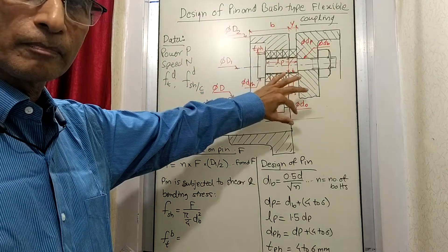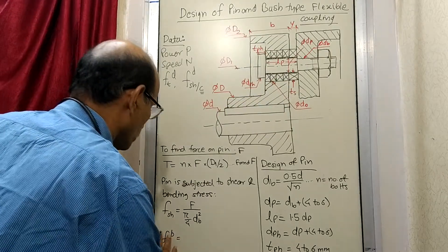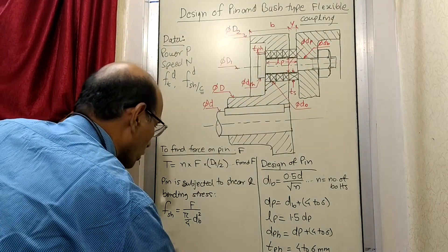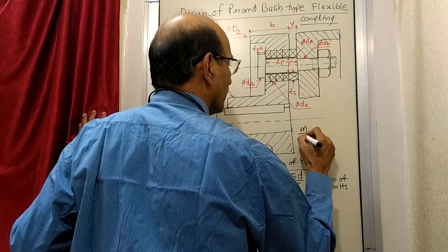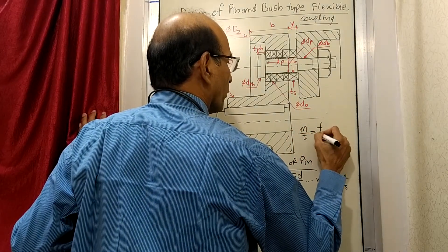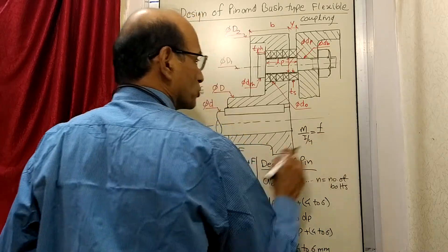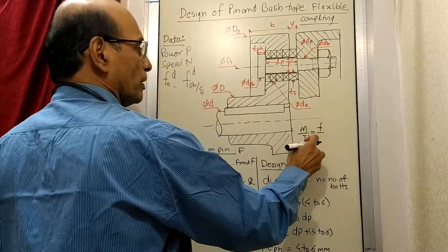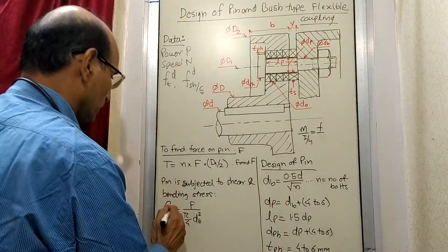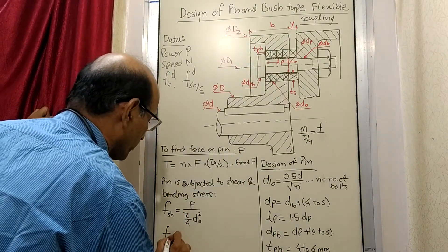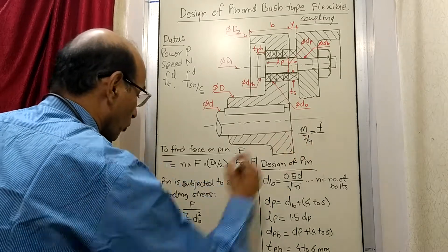Using the bending equation: M upon I equals sigma upon y, which gives M upon Z, so stress equals M upon Z. We write here F_t equals M. Now what is M here?